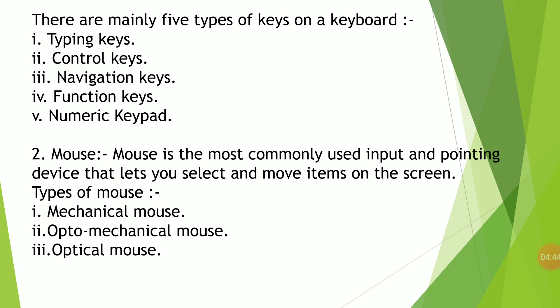The next input device is the mouse. Mouse is the most commonly used input and pointing device that lets you select and move items on a screen. There are three types of mouse: mechanical mouse, opto-mechanical, and optical mouse. The mechanical mouse has a metal or rubber ball on its lower side that can roll in all directions. The screen pointer moves according to the movement of the ball, which is detected by mechanical sensors within the mouse.